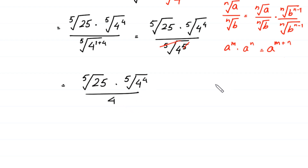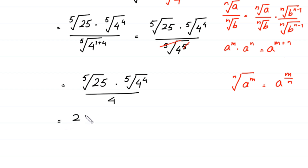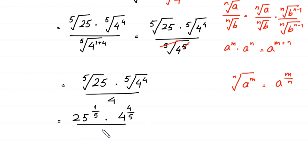According to this property, the nth root of a to the power m is equal to a to the power m over n. We can write the 5th root of 25 as 25 to the power 1 over 5, and the 5th root of 4 to the power 4 as 4 to the power 4 over 5, divided by 4.